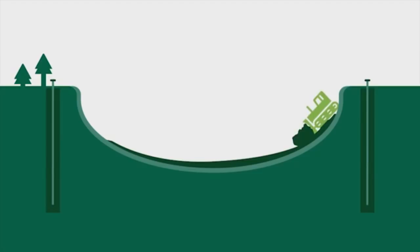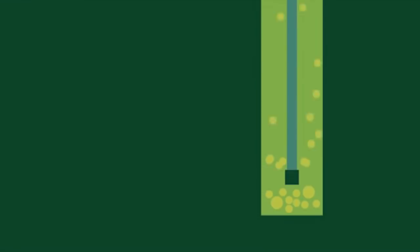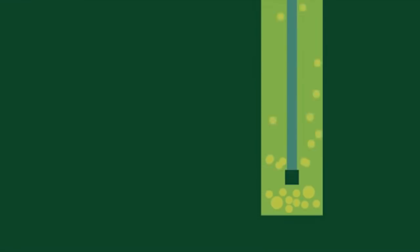Equipment compacts the waste each day before daily cover, soil or tarps, is placed to avoid potential littering and odor. Gas wells are installed to capture methane generated by the waste.